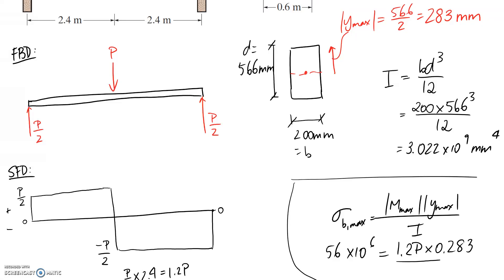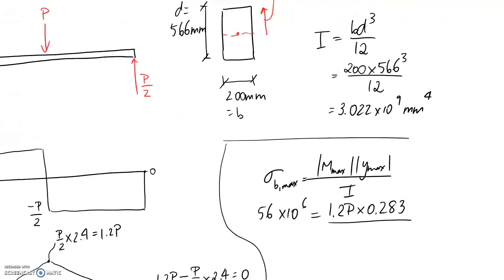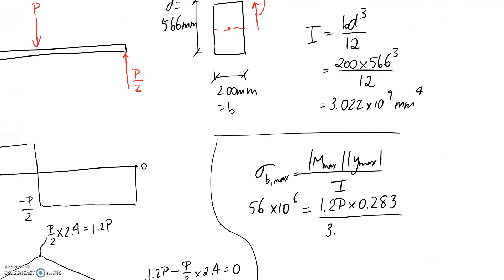And finally we need to take account of the I value, so it's 3.022 by 10 to the 9. It's currently in millimeters to the fourth, so if I want to convert this into meters to the fourth, I need to multiply by 10 to the negative 3 to go from millimeters to meters. And then because my unit is to the power of 4, my conversion also needs to be raised to the power of 4.